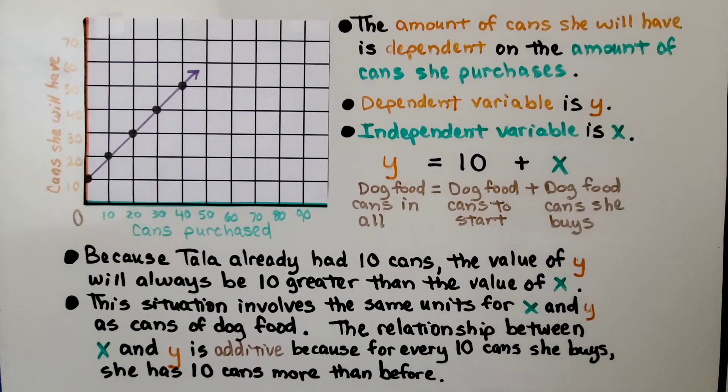Because Tala already had 10 cans, the value of y will always be 10 greater than the value of x. This situation involves the same units for x and y as cans of dog food. The relationship between x and y is additive because for every 10 cans she buys, she has 10 cans more than before.